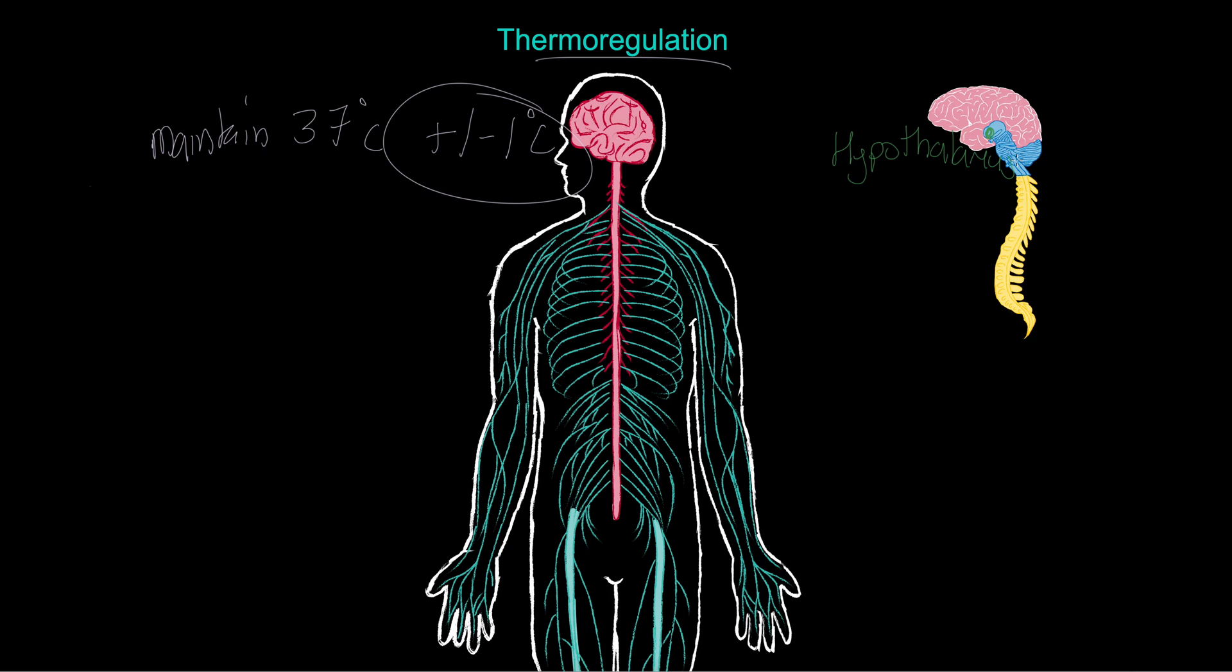So we've got the hypothalamus here. And this hypothalamus is really, really important in terms of thermoregulation. Why? Because it receives information. For example, the hypothalamus receives information from thermoreceptors.